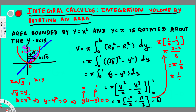So the volume of this rotating region is going to be π/6. And that's how we do this kind of problem. I hope you guys find this video helpful — see you next time!